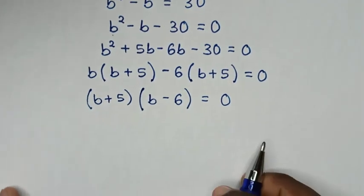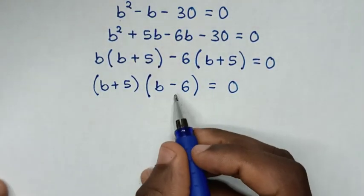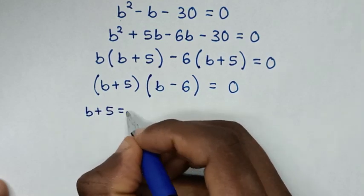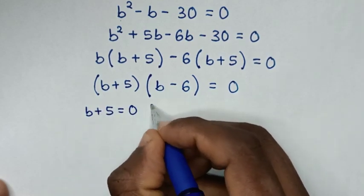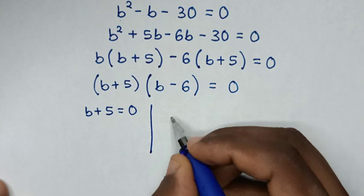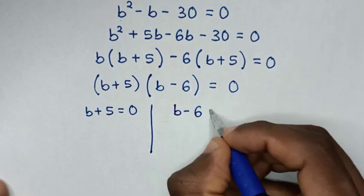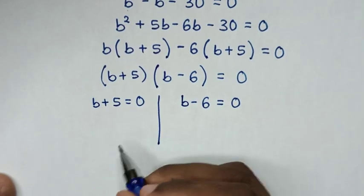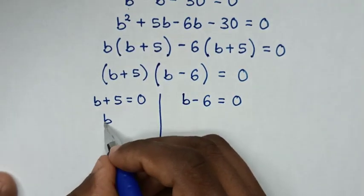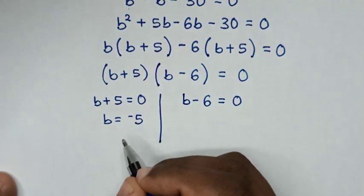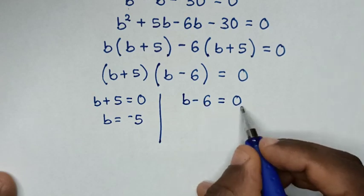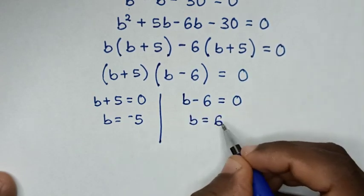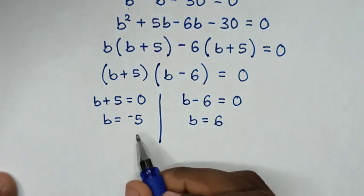In the next step, we have two solutions. The first solution is B plus 5 equals 0, and the second solution is B minus 6 equals 0. From the first solution, B is equal to negative 5. From the second, B is equal to 6. So we already have the values of B.